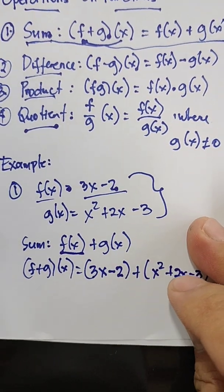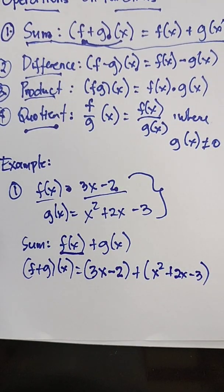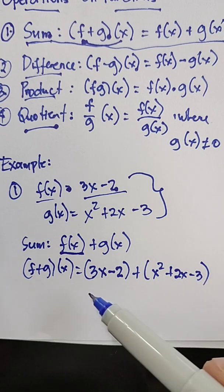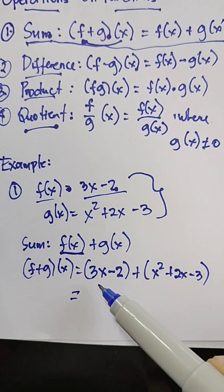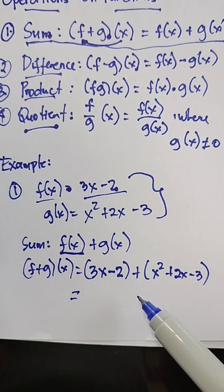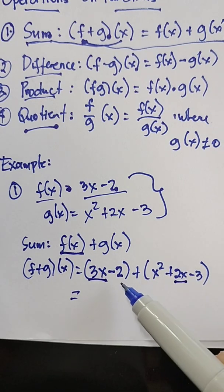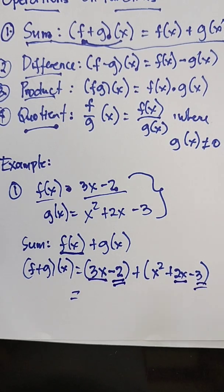Then combine like terms. When we say like terms, that is the same variable and the same exponent. The same variables are this and this one, this whole number and this one. What comes first? The highest degree comes first.